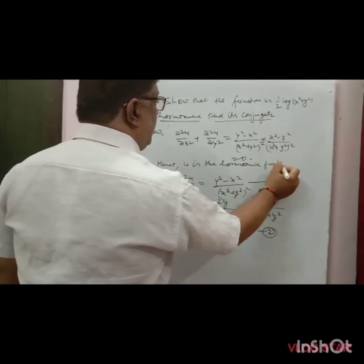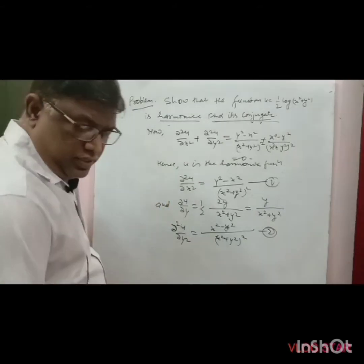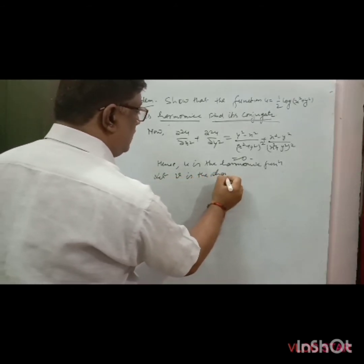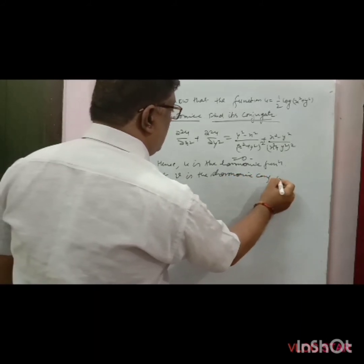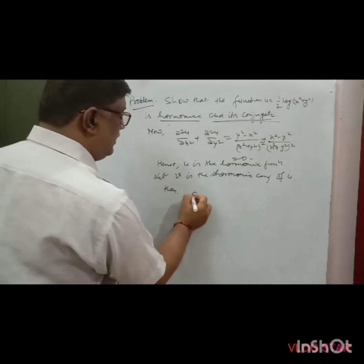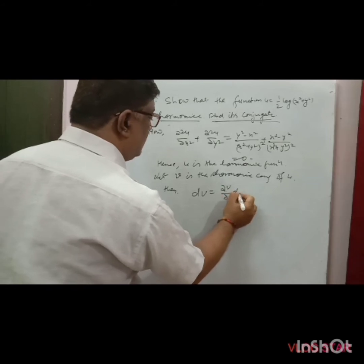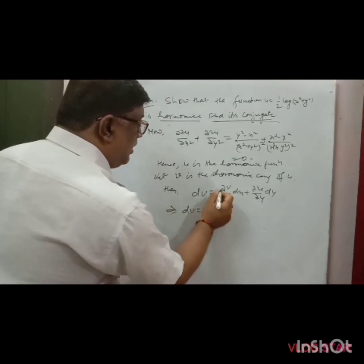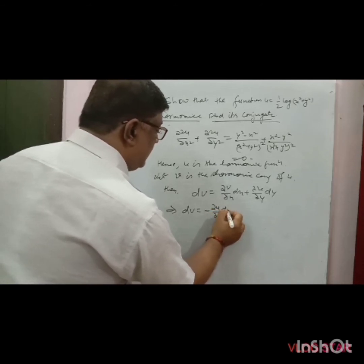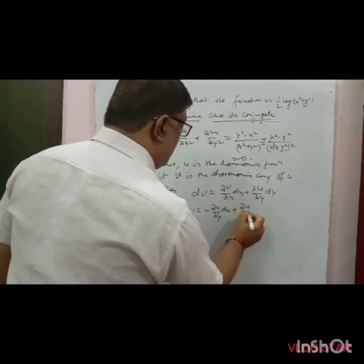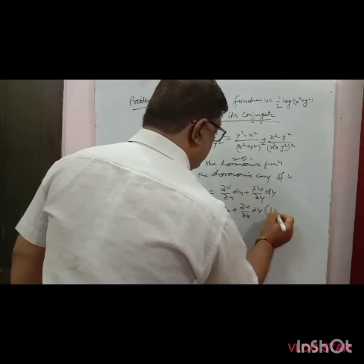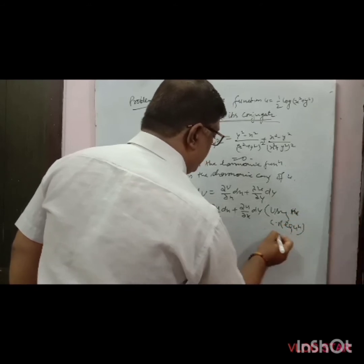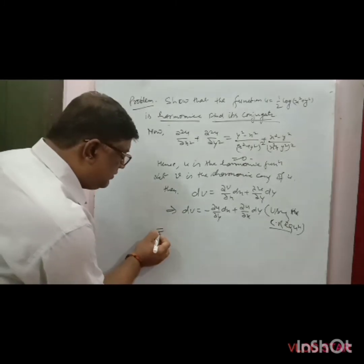Now find the harmonic conjugate. Let v be the harmonic conjugate of u. By total differentiation: dv = (∂v/∂x)dx + (∂v/∂y)dy. Using the Cauchy-Riemann equations, this becomes dv = −(∂u/∂y)dx + (∂u/∂x)dy.